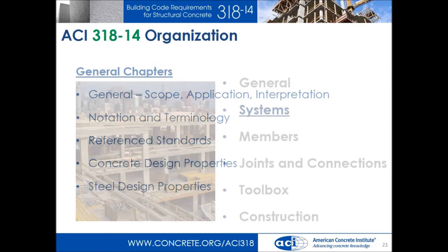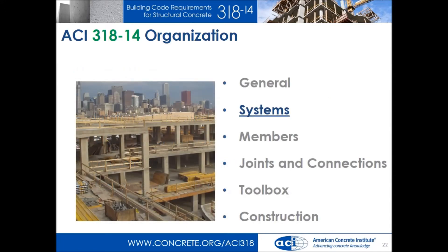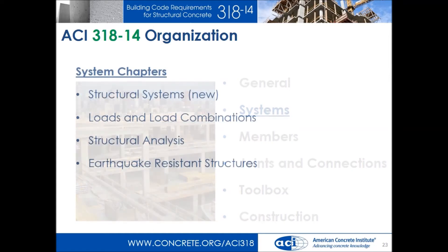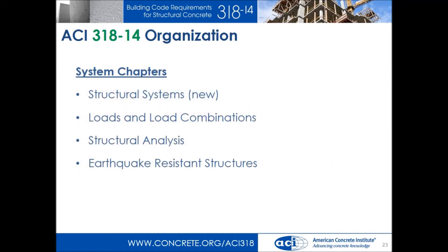The systems section is essentially new — we never had a chapter called structural systems before. Once you've established your jurisdiction and the code you're under, you then have to choose your structural system. ACI 318 never really directly talked about a structural system before. Now we are straightforward: the first thing you do as a structural engineer is choose a structural system, and this chapter will address those systems and how you go about using the rest of the code.